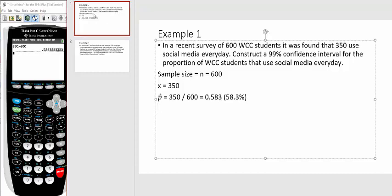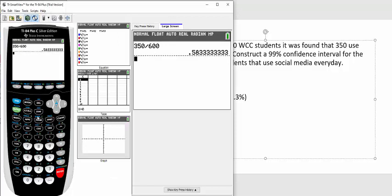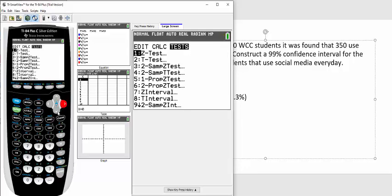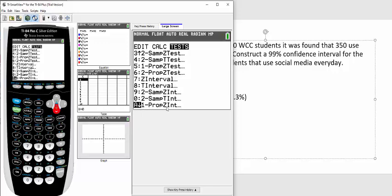The good news is our calculator will do this for us. To find this, you're always going to press the STAT button. Scroll over to TESTS and scroll down till you see this 1-prop z interval. This is a 1 proportion z interval. This is the confidence interval option we're going to use in our calculator for this section. I'm going to hit enter.